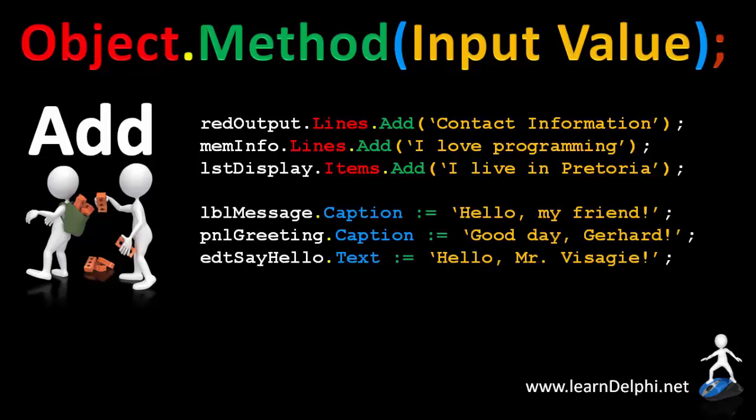With caption and text properties it is different. A caption or text property is a singular value. In other words, they do not contain a collection of values. To populate a caption or text property with content, we use an assignment operator to assign the value.